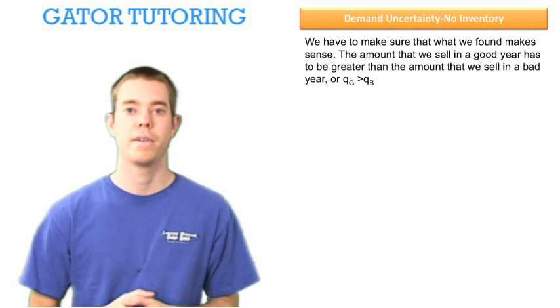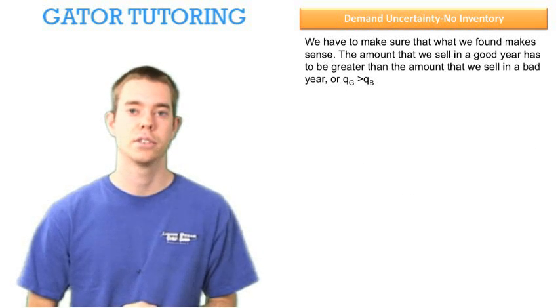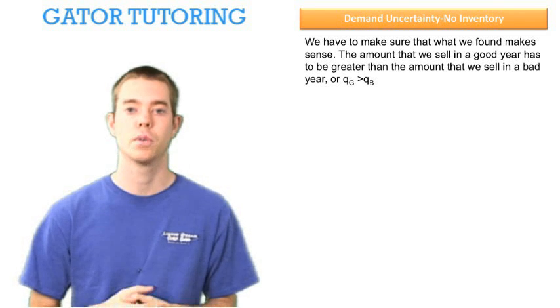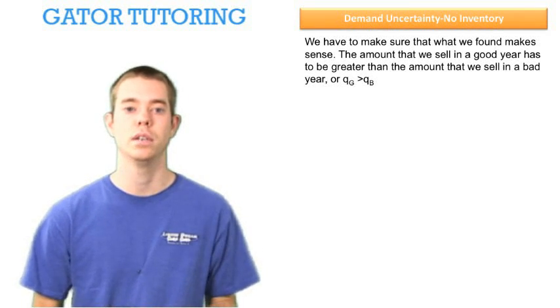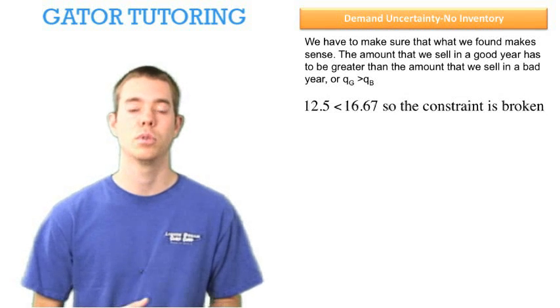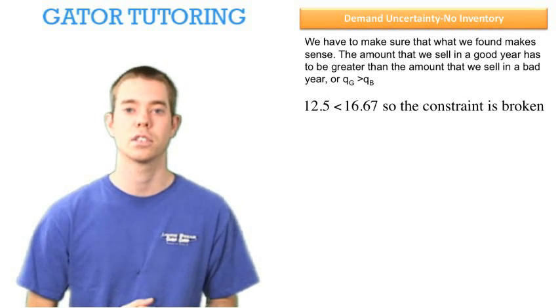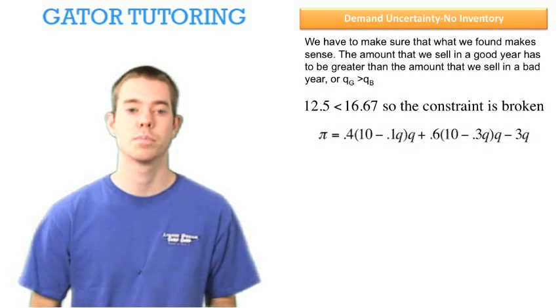We have to make sure that what we have found makes sense. And that is, the amount that we sell in a good year should be greater than the amount that we sell in a bad year. Since in our example it is not, 12.5 is less than 16.67, the constraint is broken. When the constraint is broken, we need to go back and plug in Q everywhere we saw QG or QB in our original profit function.